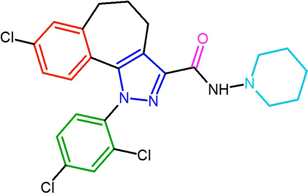A cannabinoid receptor antagonist, also known simply as a cannabinoid antagonist or as an anticannabinoid, is a type of cannabinoidurgic drug that binds to cannabinoid receptors and prevents their activation by endocannabinoids. They include antagonists, inverse agonists, and antibodies of CBRs.